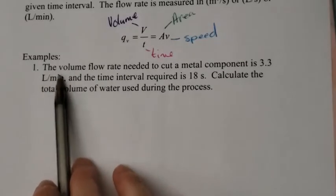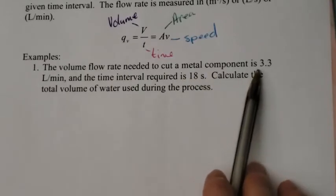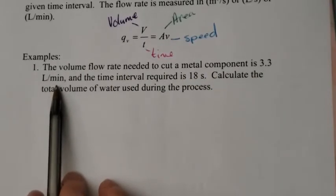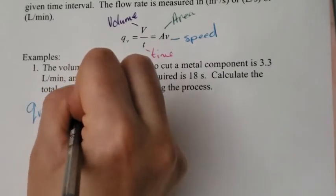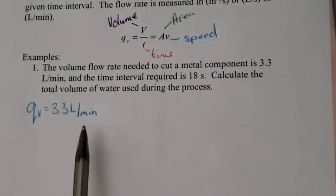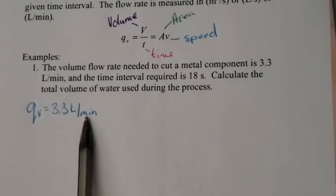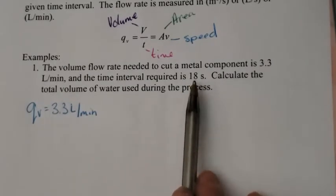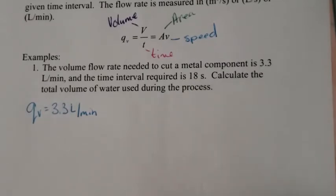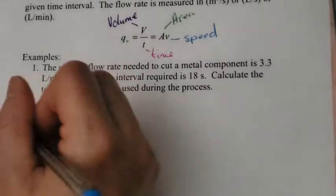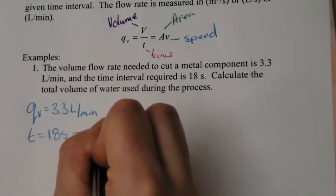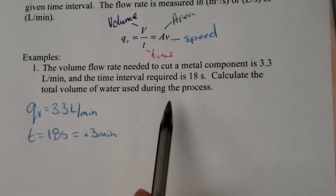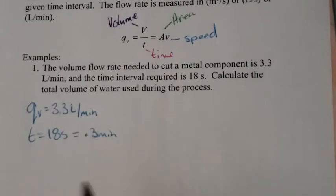Our first example says the volume flow rate needed to cut a metal component is 3.3 liters per minute. Volume flow rate is Q with subscript V, and that's 3.3 liters per minute. We have to pay attention to our units because it's per minute—when we find our time, it needs to be in minutes as well. The time interval required is 18 seconds, but we need to change that to minutes. To change it to minutes, we divide by 60 and get 0.3 minutes.